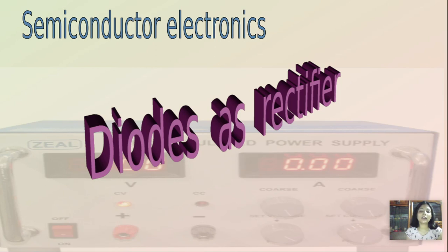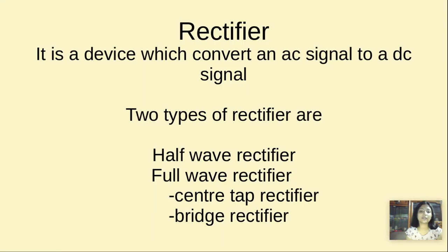Before going to the circuit diagram of the rectifier, let us first understand what a rectifier is and the types of rectifier. A rectifier is generally a device which converts an AC signal to a DC signal, just like our mobile charger. There are two types of rectifier: half-wave rectifier and full-wave rectifier. Full-wave rectifier contains center-tap rectifier as well as bridge rectifier.